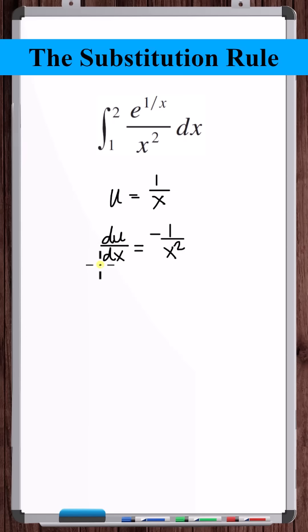Now, if we treat du and dx like they're differentials, then we can write that du equals minus 1 over x squared dx.